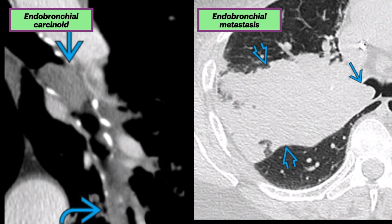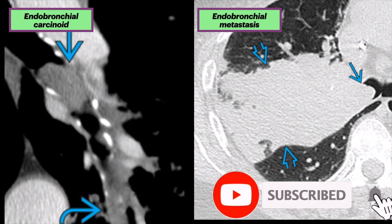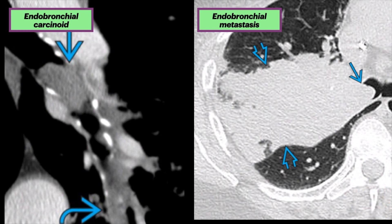Last are endobronchial lesions. On the left we see a CT of an endobronchial carcinoid. There is a central obstructing left lower lobe carcinoid tumor with resultant peripheral lower lobe atelectasis. The carcinoid tumor may be entirely endobronchial as in this case. The right-hand axial CT shows a patient with renal cell cancer and a right upper lobe consolidation and volume loss, all due to a central endobronchial metastasis completely obstructing the right main stem bronchus.